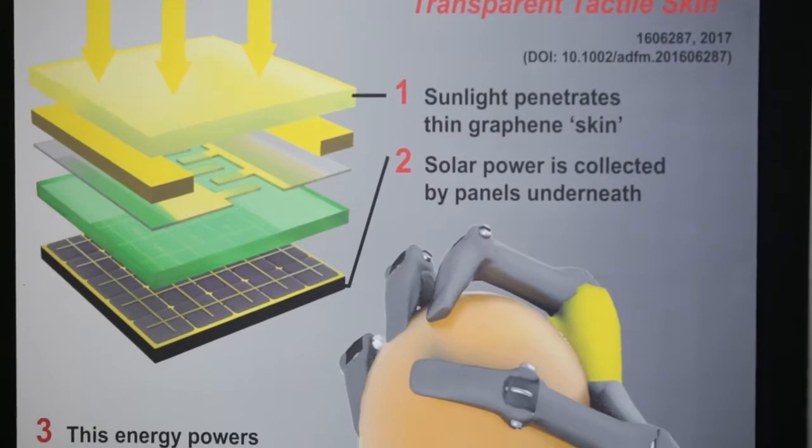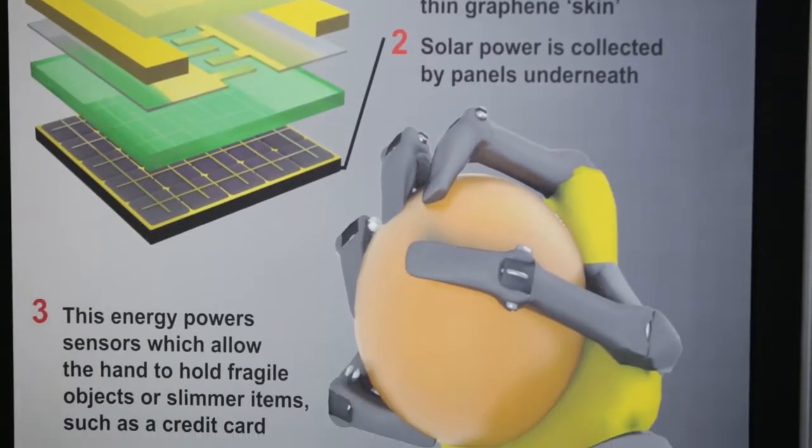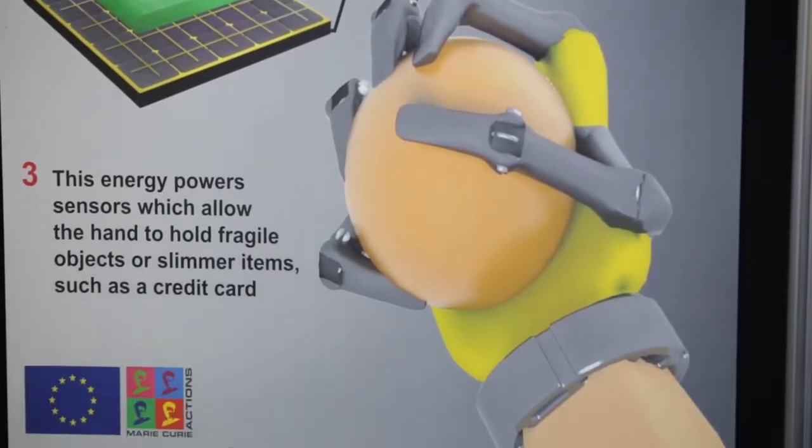We need to fabricate gloves, smart gloves, that have an array of sensors allowing the robot to apply the proper grabbing for non-conventional objects like fragile objects, rigid objects, soft objects.